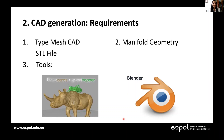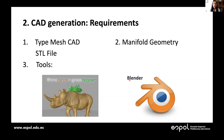I'll continue with the second item of this tutorial: CAD geometry generation. First, it's important to know how to prepare the geometry for OpenFOAM. There are three basic requirements: the CAD must be in triangle mesh type and preferably exported as an STL file; the geometry must be manifold, meaning a closed space; and we prefer to use Rhinoceros and Grasshopper to generate the 3D geometry and Blender to check the mesh.